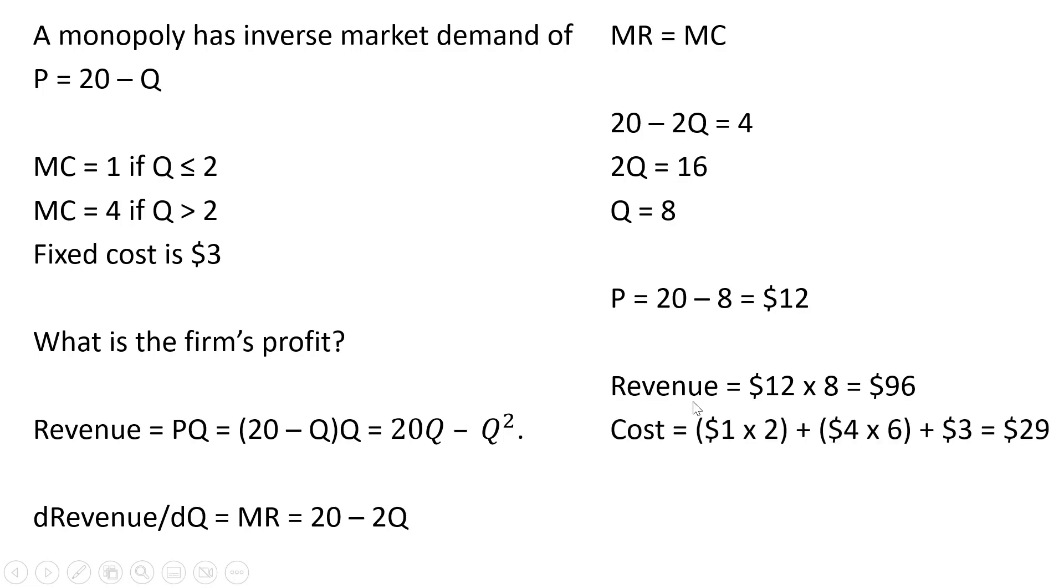The firm's total cost, out of this 8 units, 2 units are being produced when marginal cost is $1. So the cost is going to be this $1 marginal cost over the first 2 units. And then the remaining 6 units of this 8 are produced when marginal cost is $4. So the marginal cost of $4 over 6 units, we get 4 times 6. And then we're going to add the fixed cost of $3, so the firm's total cost is $29.